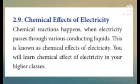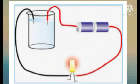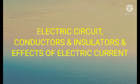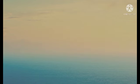Chemical effects of electricity: chemical reactions happen when electricity passes through various conducting liquids — this is known as the chemical effect of electricity. You will learn about the chemical effect of electricity in your higher classes. In this part we have learnt about electric circuit, conductors and insulators, and effects of electric current. Thank you, children.